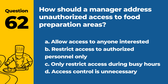Question 62. How should a manager address unauthorized access to food preparation areas? A. Allow access to anyone interested. B. Restrict access to authorized personnel only. C. Only restrict access during busy hours. D. Access control is unnecessary. Answer: B. It's important to control access to food preparation areas to prevent potential contamination and maintain food safety.